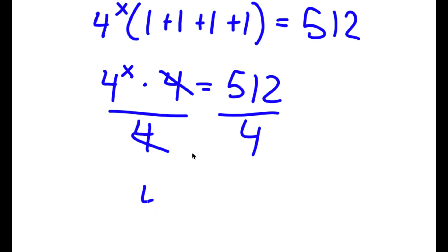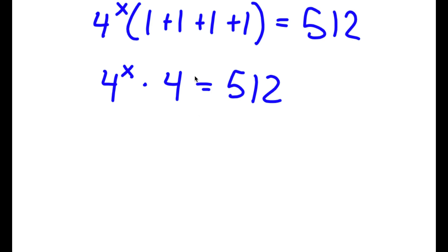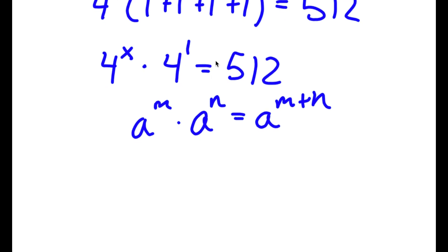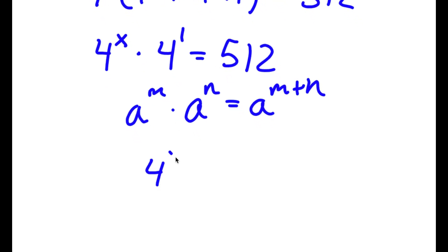Instead of dividing by 4, I'm going to multiply these two together. If I have something in the form a to the power of m times a to the power of n, this equals a to the power of m plus n. So 4 to the power of x times 4 to the power of 1 equals 4 to the power of x plus 1, which is equal to 512.